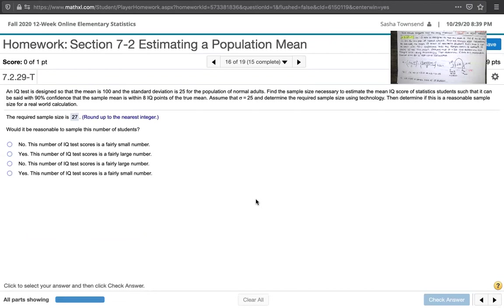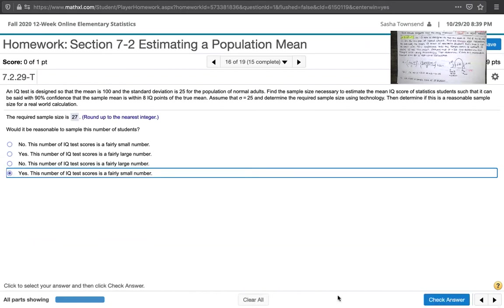Yes, it's very reasonable. Finding 27 students, that's not too bad at all. That's a fairly small number. So it's very reasonable.